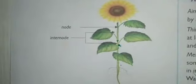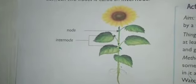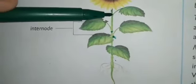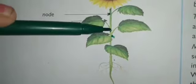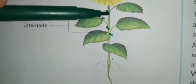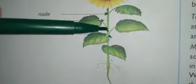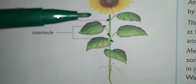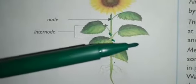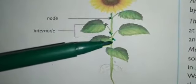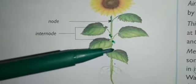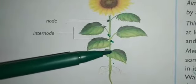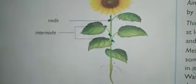The part of the stem between two nodes — this is one node and this is another node — the gap or the part of the stem between the two nodes is called an inter-node. The point where a leaf or a branch arises on the stem is called a node, and the gap between two nodes is called an inter-node.